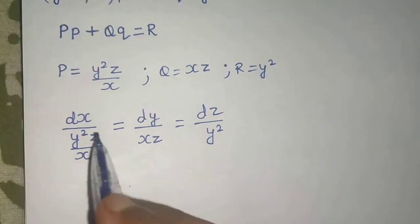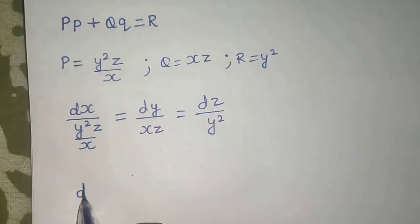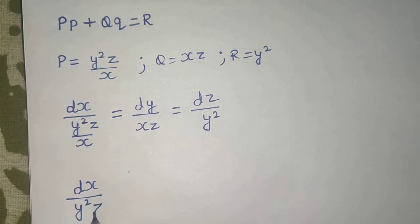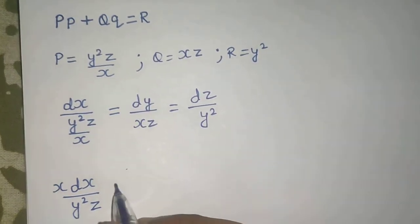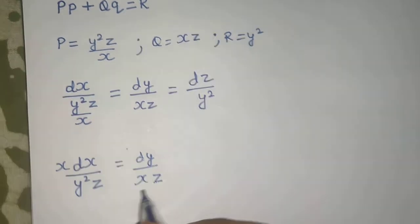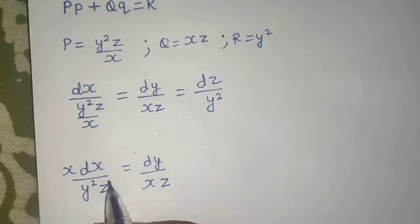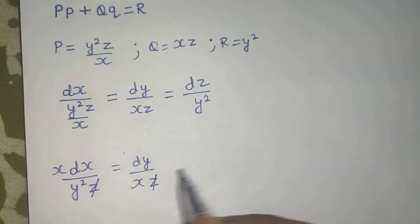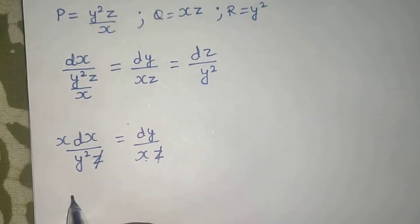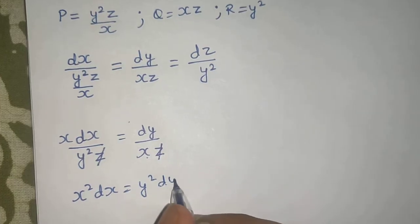So first I am equating first and second. So if I do so, I will get dx divided by y square z and this x will go up equals to dy divided by xz. Now x will create trouble because I have dx and dy so I want to eliminate. If I send this x to that side, x squared dx equals to y squared dy.